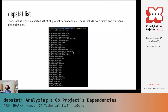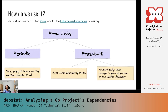The final subcommand Depstat provides us with is a very simple one: depstat list. All this does is simply print a sorted list of all the project dependencies.